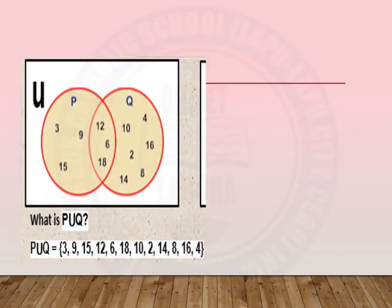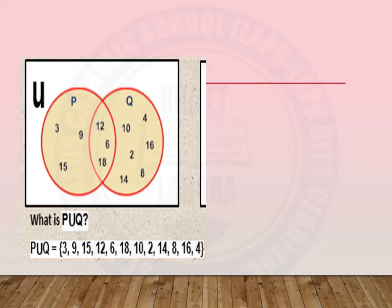Let's have examples. In this Venn diagram, we have two sets, set P and set Q. We are asked, what is P union Q? Union means the combination of all the elements of the given sets. So we are just going to write the elements of set P and the elements of set Q. P union Q has elements 3, 9, 15, 12, 6, 18, 10, 2, 14, 8, 16, and 4. Note that the elements can be arranged in any order.